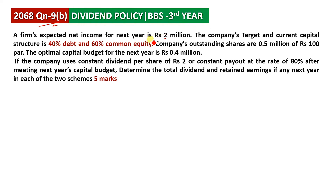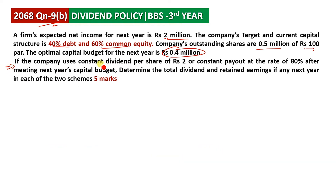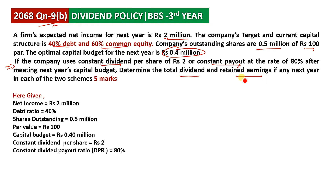For the next part: net income is 2 million, target capital structure is debt 40% and common equity 60%, outstanding shares are 0.5 million, par value is 120, and the optimal capital budget for next year is 0.4 million. The constant dividend per share and constant dividend payout ratio is 80% or 50%.